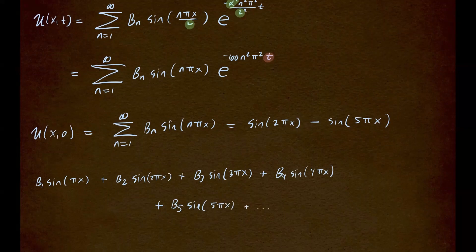b5. So that's n equals 5. So b5 sine of 5 pi x plus, of course, there are more terms, since this is infinite sum,